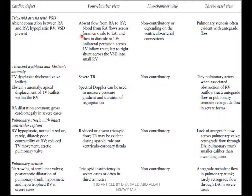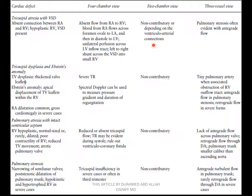In the four-chamber view, there is absent flow from right atrium to right ventricle. Blood from right atrium flows through the ASD to the left ventricle, with unilateral perfusion across the left ventricular outflow tract, left to right shunt across the VSD into the small right ventricle. So blood coming to the right ventricle comes from the left ventricle through VSD in tricuspid atresia with VSD. The five-chamber view is non-contributory, depending on the ventricular-arterial connection.